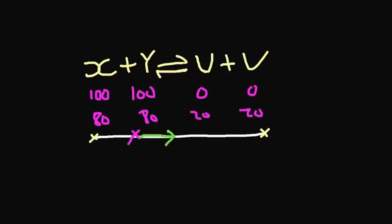So if I change the conditions, the equilibrium shifts to the right — now I've got 70 of U, 70 of V, 30 of Y, and 30 of X. So if it's U and V that I want, this is much better. And the way I did that is I just changed the conditions. The conditions we're going to consider are temperature and pressure.